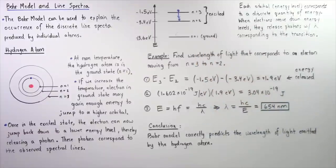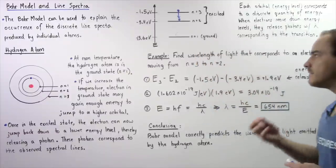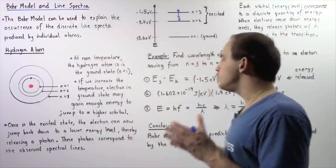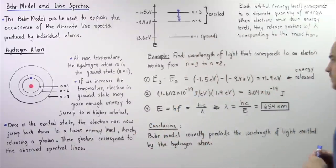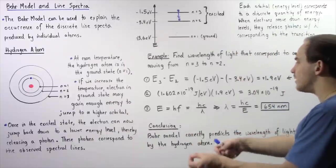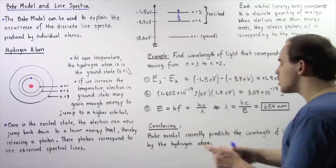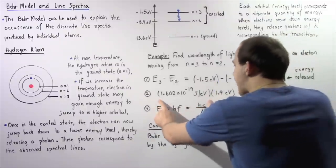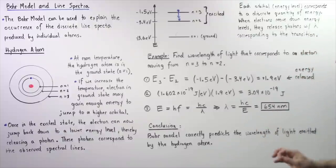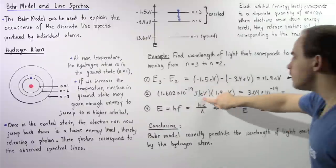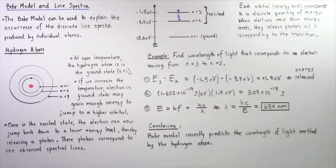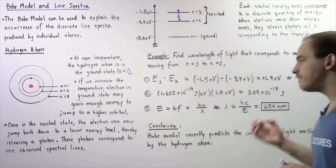Now let's convert from electron volts to joules. To find the wavelength, we have to use the relevant equation, which requires the usage of joules and not electron volts. The conversion from electron volts to joules requires that we multiply 1.9 electron volts by 1.602 times 10 to the negative 19 joules per electron volt. The electron volts cancel and we get about 3.04 times 10 to the negative 19 joules of energy found in that photon.